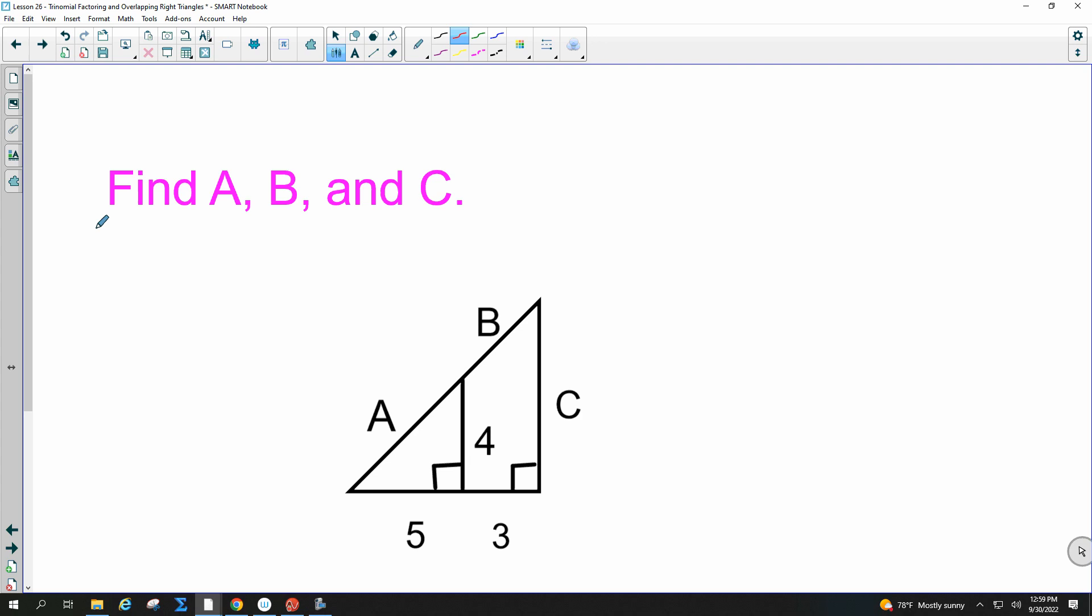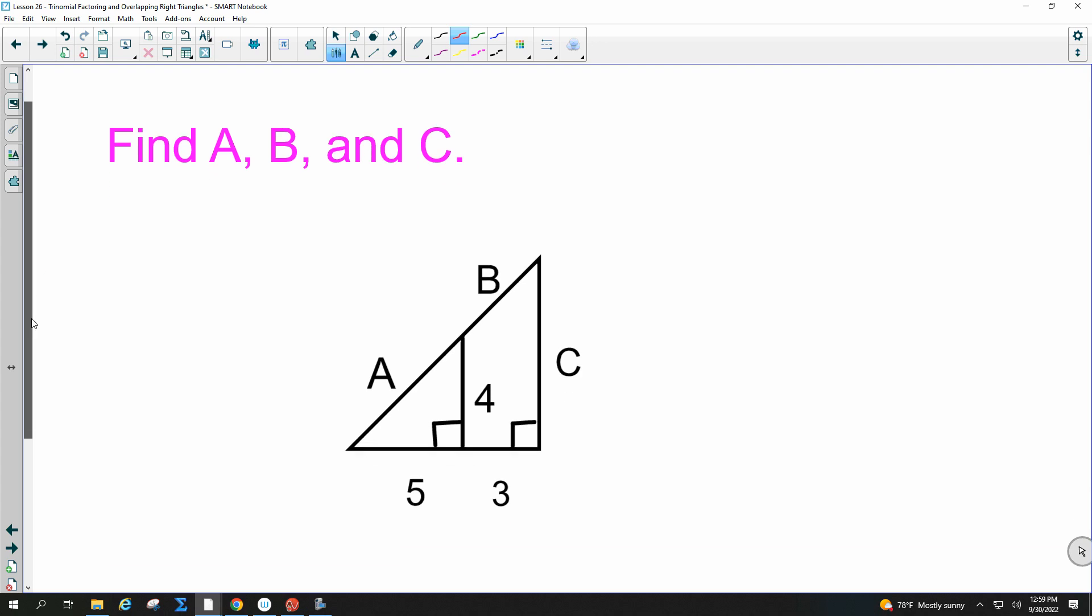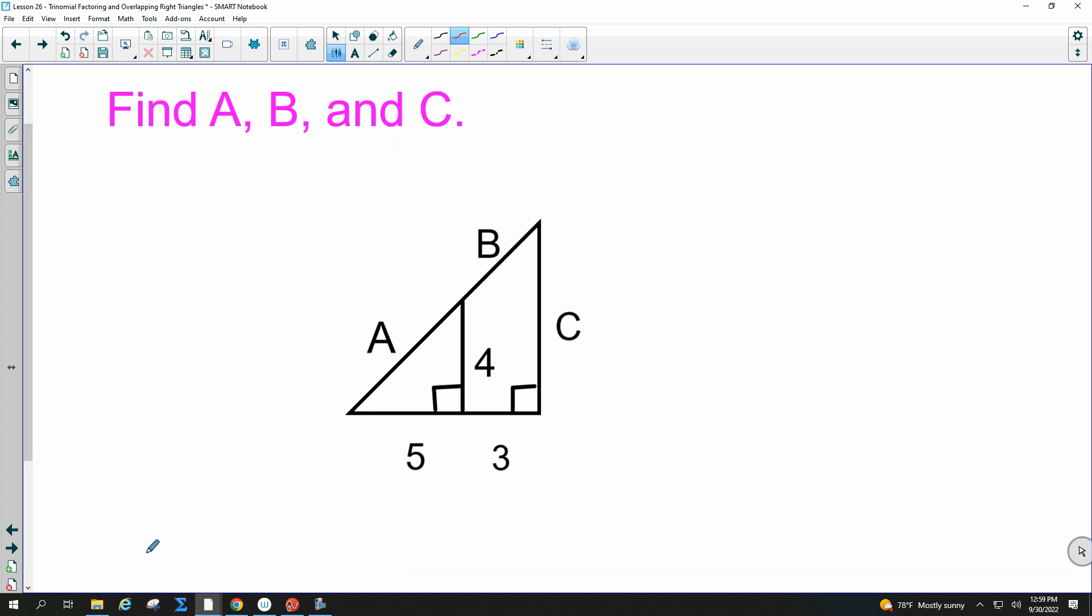More triangles. Go ahead and write this down. We love triangles in Saxon. So this one's pretty cool. We've got embedded triangles again, but we have a right triangle as well. So we can add in another lovely skill that we know. And then everything is really similar to what we did with the embedded triangles the other day.